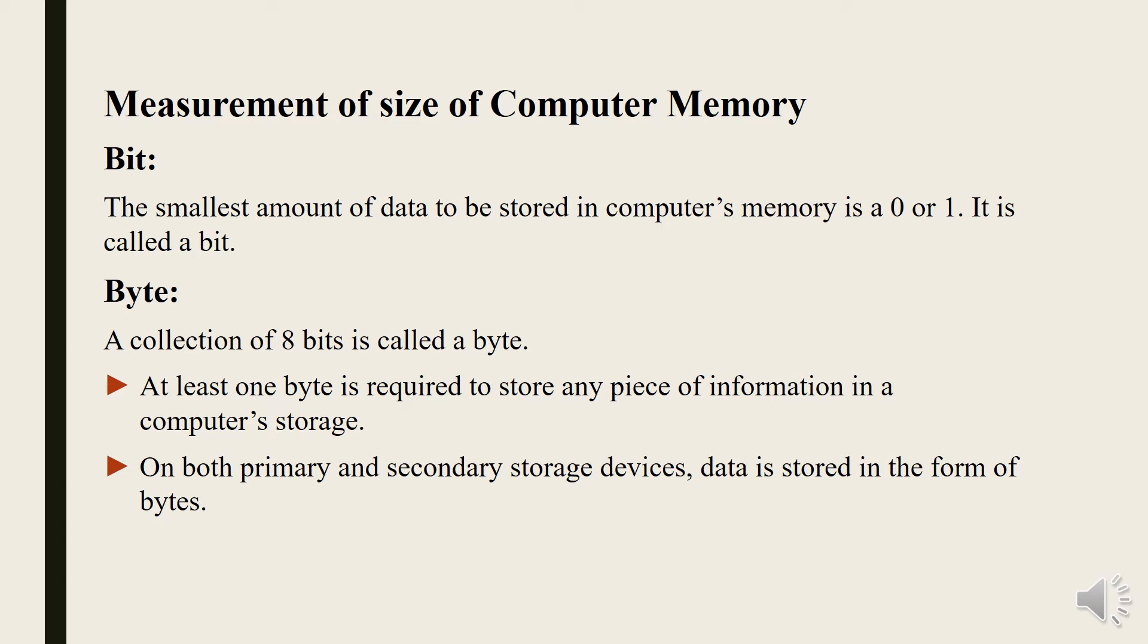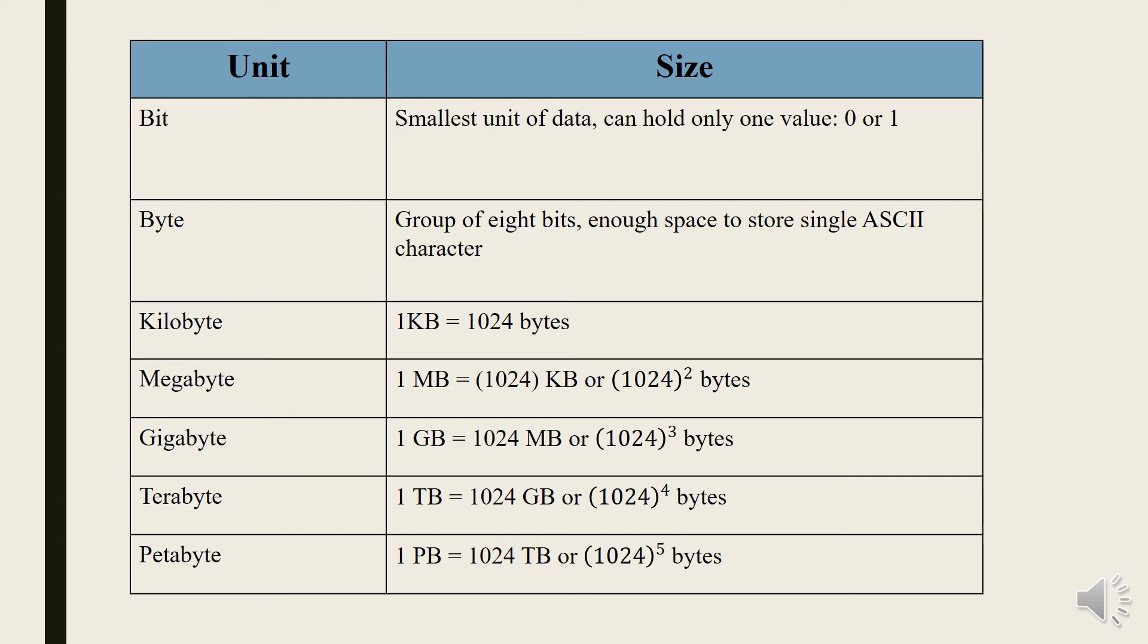What is byte? A collection of 8 bits is called a byte. At least one byte is required to store any piece of information in a computer's storage. On both primary and secondary storage devices, data is stored in the form of bytes. Here are given some units and their sizes.